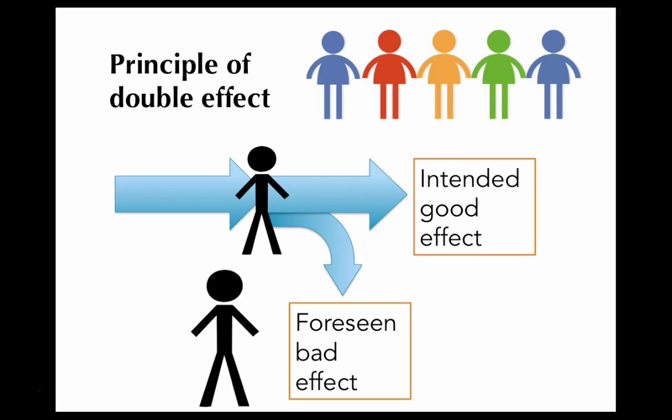This is what might be used to make a distinction between the trolley driver case and the transplant case. In the transplant case, the surgeon uses the death of the healthy person as a means to achieve the good effect of saving five people. She can't achieve that good result without killing the healthy person. But that's precisely what the principle of double effect will not allow.